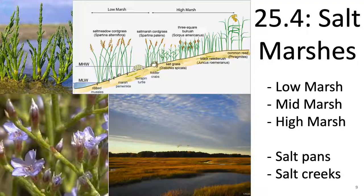That's it for shorelines. Now let's talk about salt marshes. Salt marshes occur in temperate latitudes where coastlines are protected from wave action — within estuaries, deltas, and by barrier islands and dunes. The structure of these is, again like shorelines, dictated by tides and by salinity.